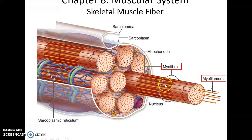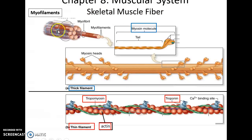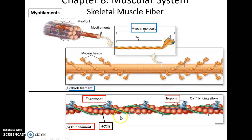Looking at the myofibrils themselves, they are made up of bundles of myofilaments — specifically thick filaments and thin filaments. The thick filaments are thicker and made up of the protein myosin. The thin filaments are thinner and contain three different proteins: long chains of actin protein, tropomyosin proteins, and troponin proteins that bind calcium.